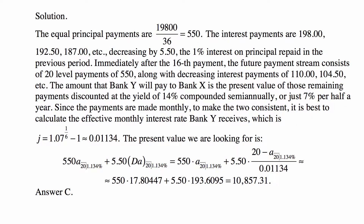Note that we assume Bank Y gets the rate of return that it wants. The equal principal payments are $19,800 divided by 36, so $550. The interest payments are $198, then $192.50, then $187, and so on, decreasing by $5.50 — the 1% interest on the principal repaid in the previous period — so every time it decreases by that amount.